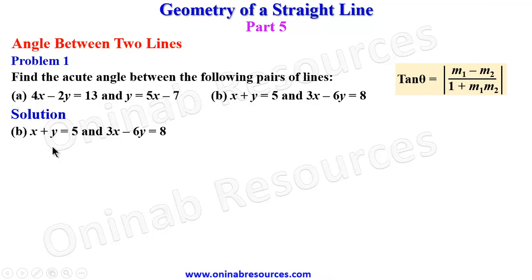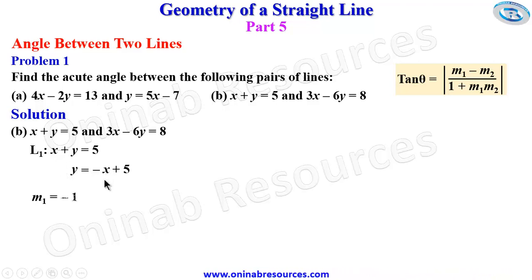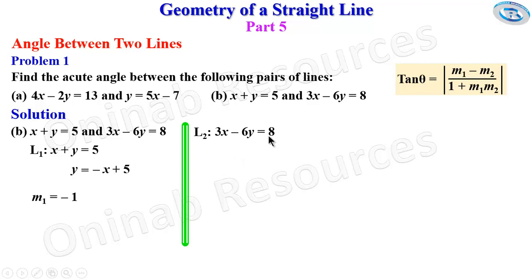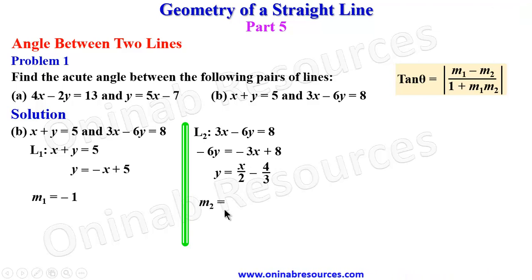For part b, we have the equations of two lines. For the first one, x plus y equals 5 — making y the subject gives y equals negative x plus 5, so m1 equals negative 1. For the second line, 3x minus 6y equals 8: negative 6y equals negative 3x plus 8. Dividing through by negative 6 gives y equals x over 2 minus 4 over 6. So m2, the gradient of the second line, is 1 over 2.